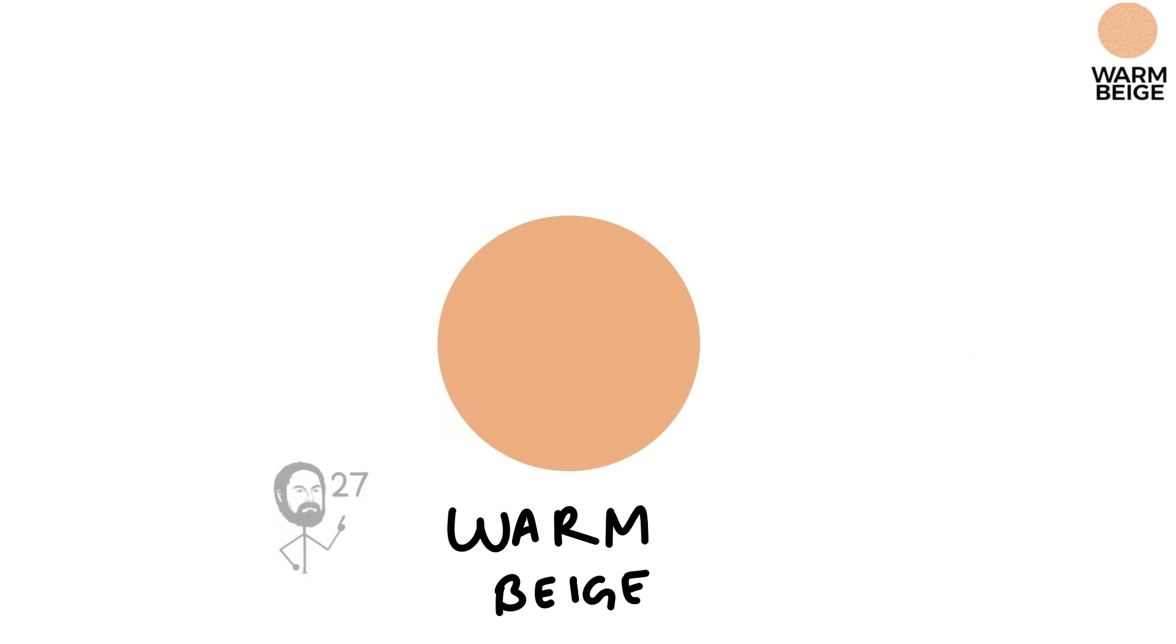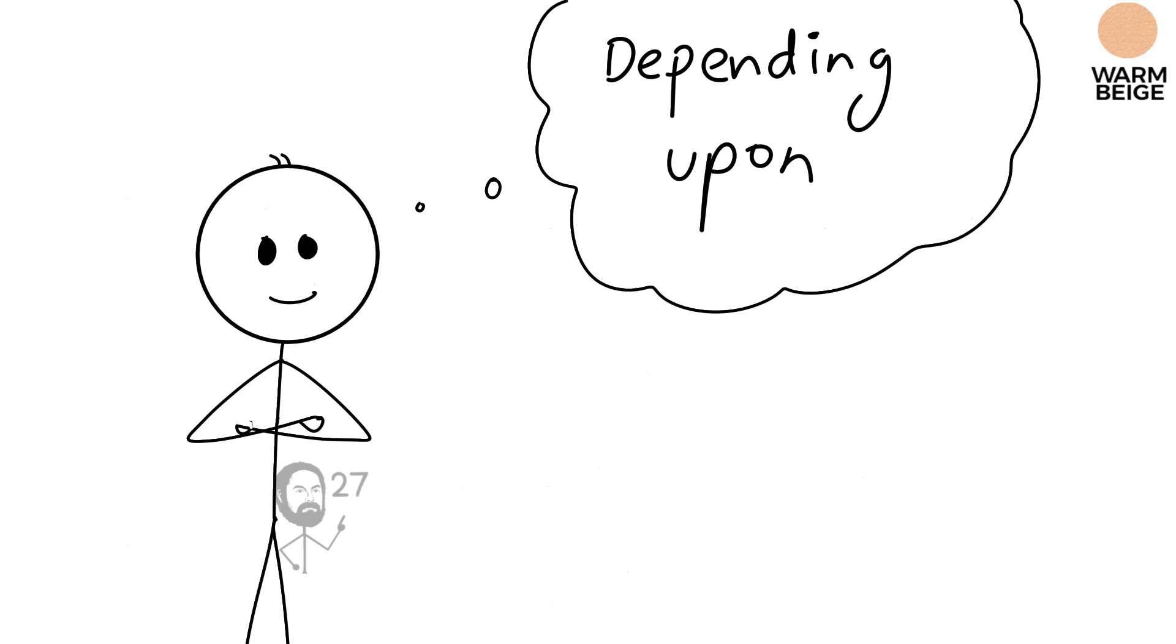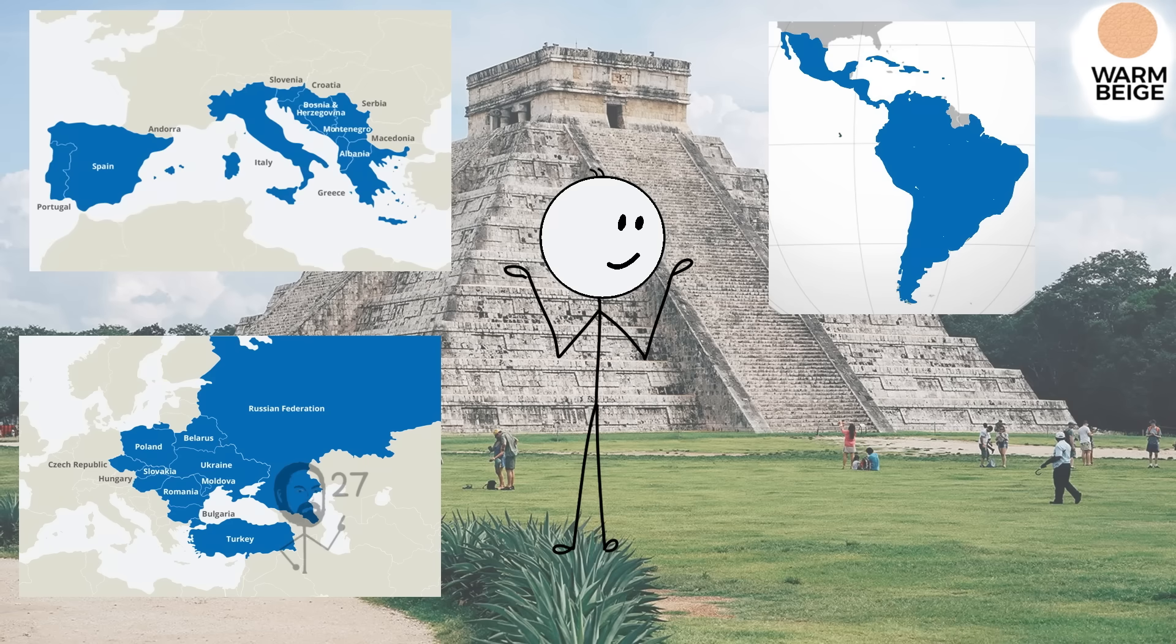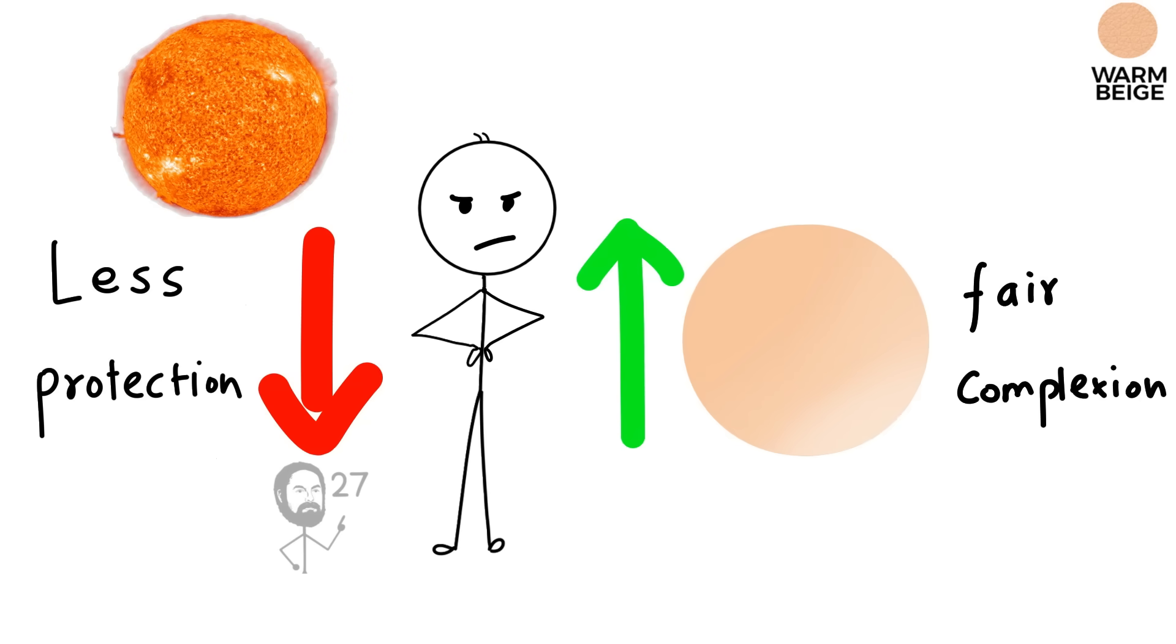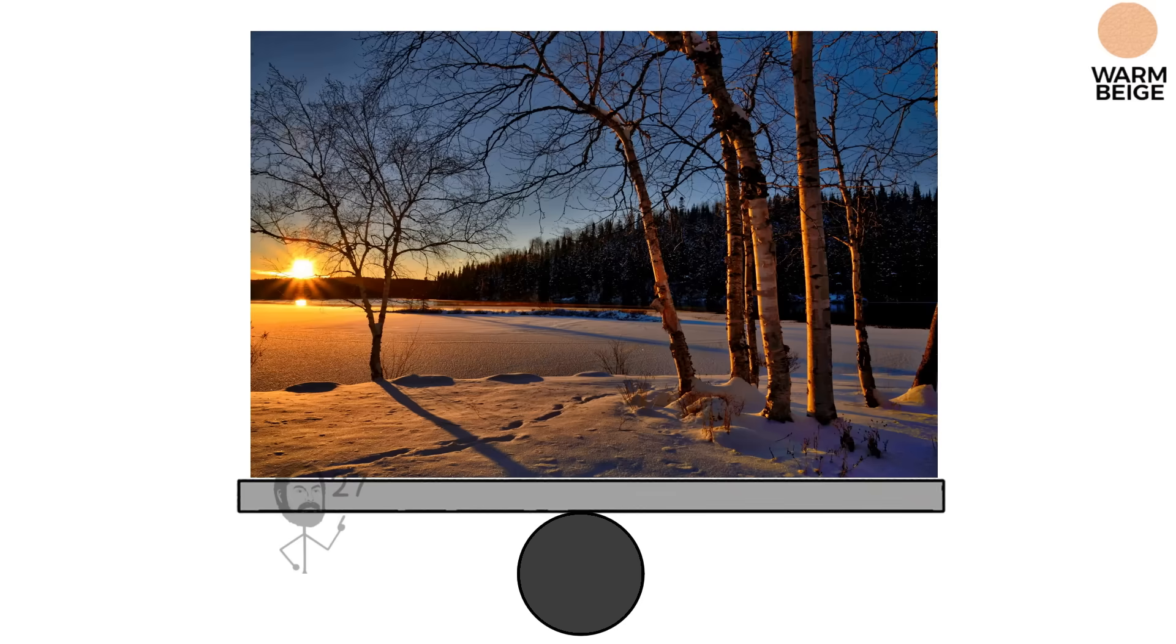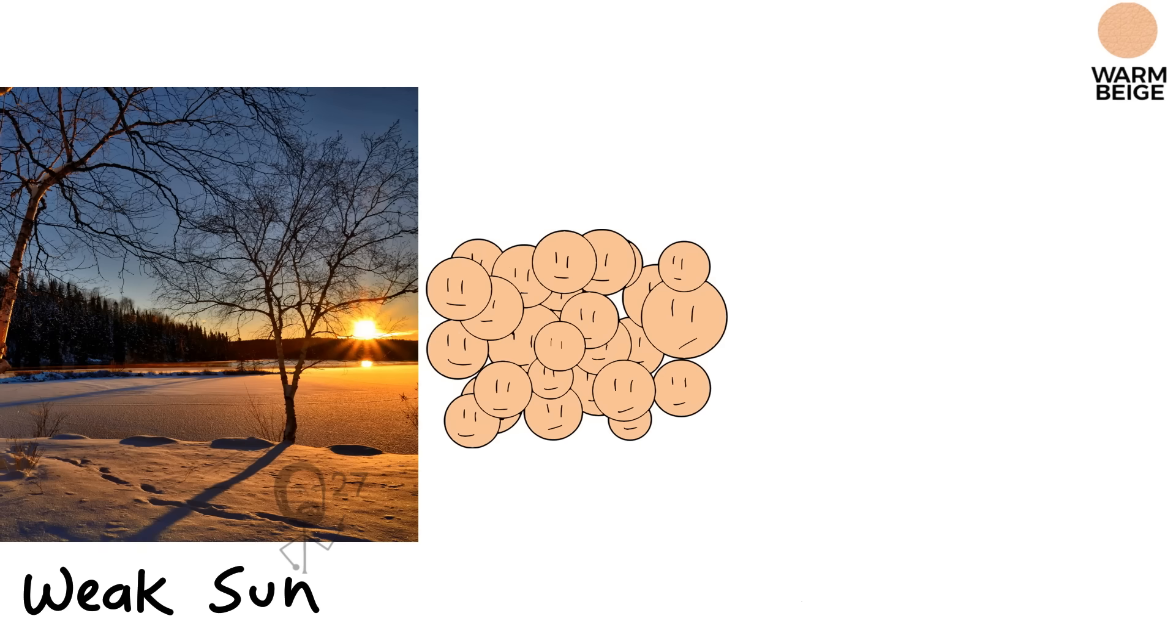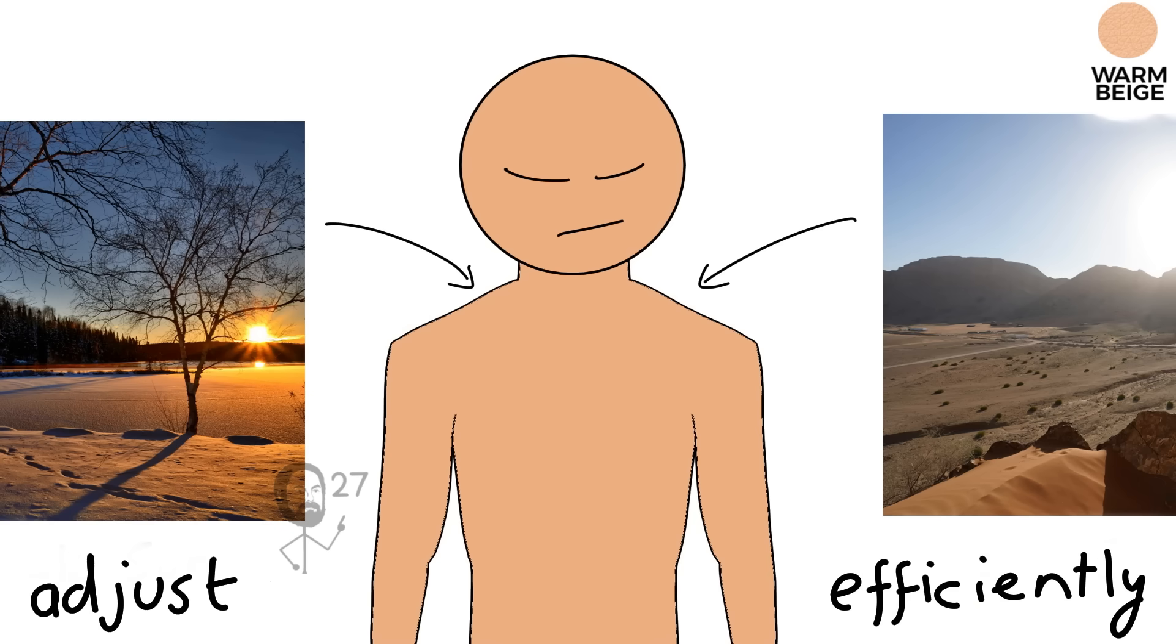Warm beige skin sits between light brown and fair, with a neutral base that can lean slightly pink, golden, or gray, depending on genetic background. It is common in southern and eastern Europe, parts of Latin America, and regions of West Asia. The melanin levels here are lower than in olive tones, offering less built-in sun protection, yet still more than the fairest complexions. This balance was shaped in environments with marked seasonal cycles, places where populations faced both long periods of weak sunlight and bursts of stronger summer sun. The skin needed to adjust efficiently to both conditions.